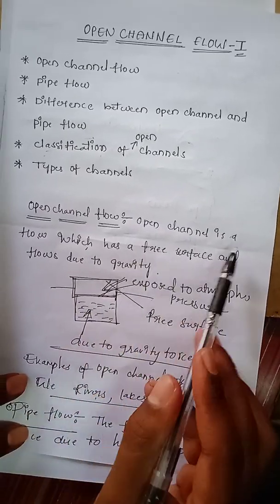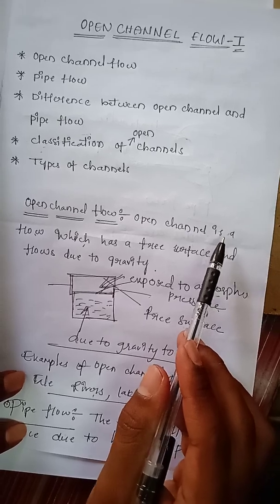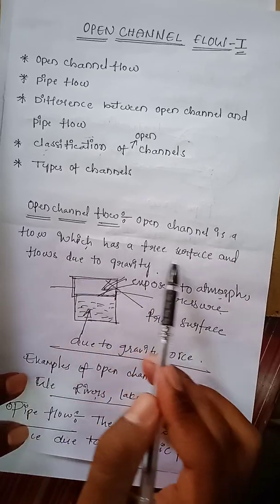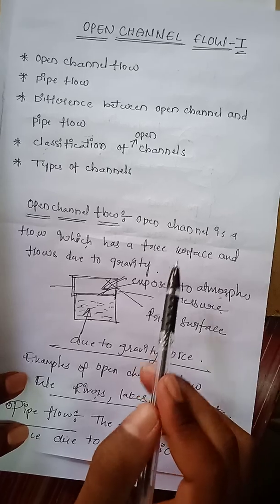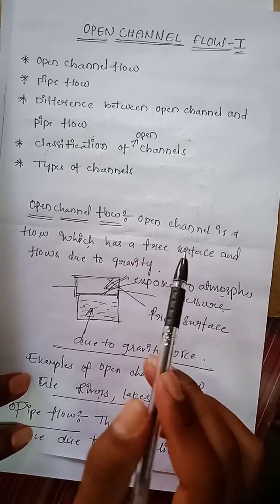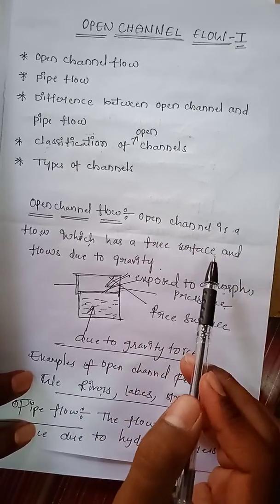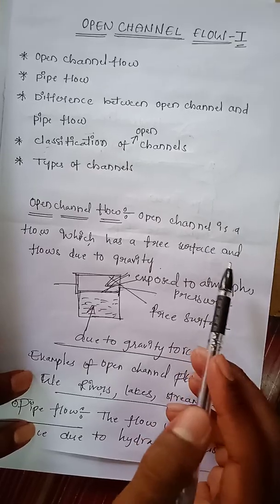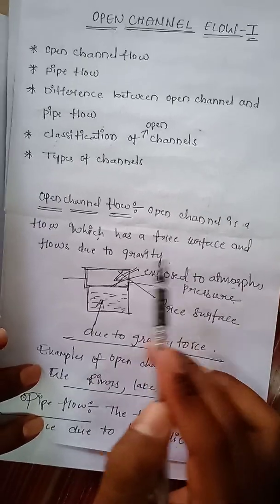Open channel flow is defined as a flow which has a free surface and flows due to gravity. The channel flows under the gravity force and has a free surface at the top.